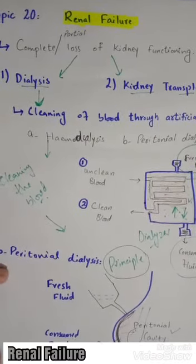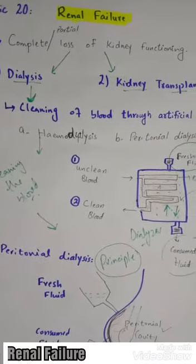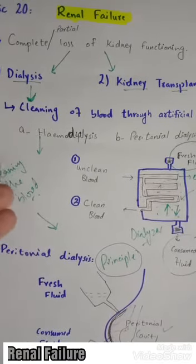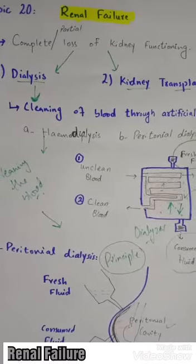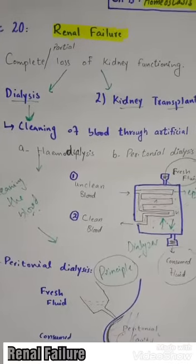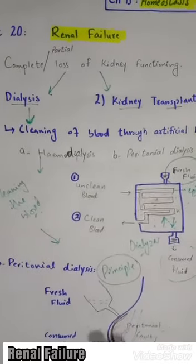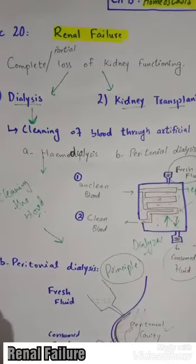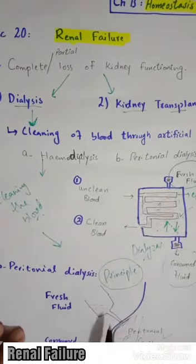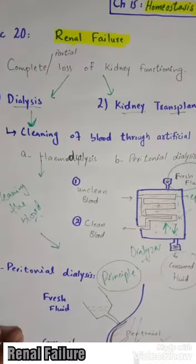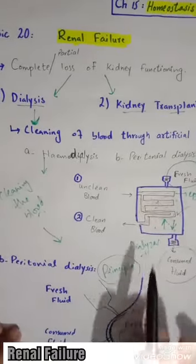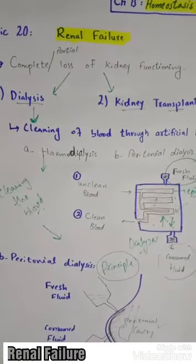Peritoneal dialysis must be repeated 2 times per day, while hemodialysis must be repeated 2 to 3 times per week. Hemodialysis is the more efficient process, while peritoneal dialysis is less efficient. Both are time-consuming processes.